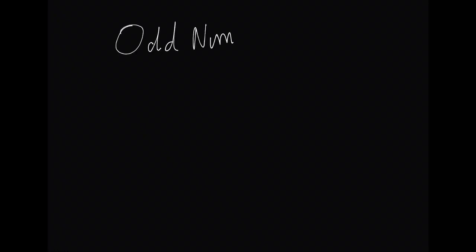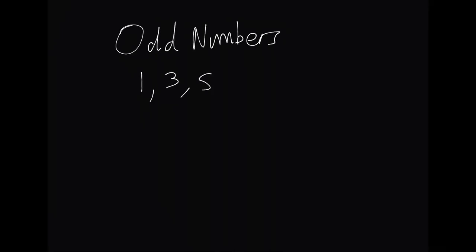Next type of numbers are odd numbers. These start, excluding zero again, at 1 and you just need to add plus 2 each time. So 1, 3, 5, 7 and so on.